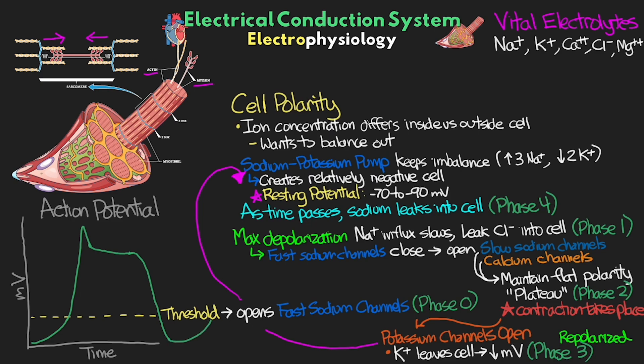The speed at which phase 4 creeps back up is fastest within the SA node myocytes, and then gets slower and slower the more distal we go in the conduction system. This is what leads to the slowing of that intrinsic or backup rate that we see.